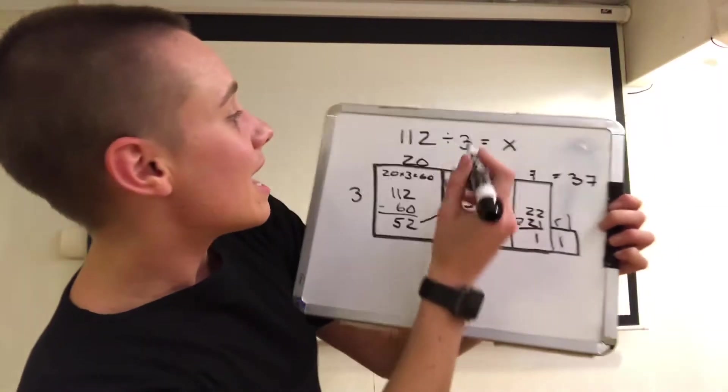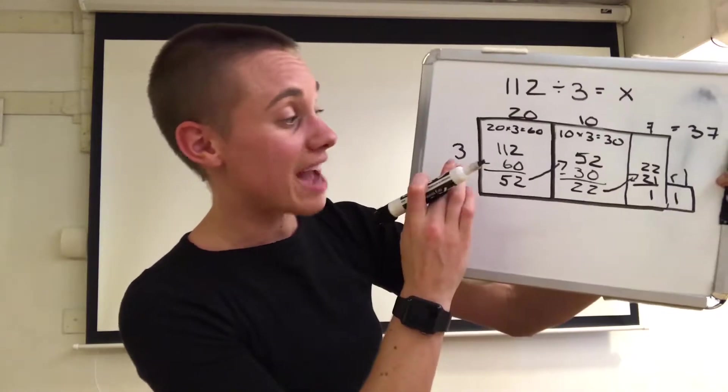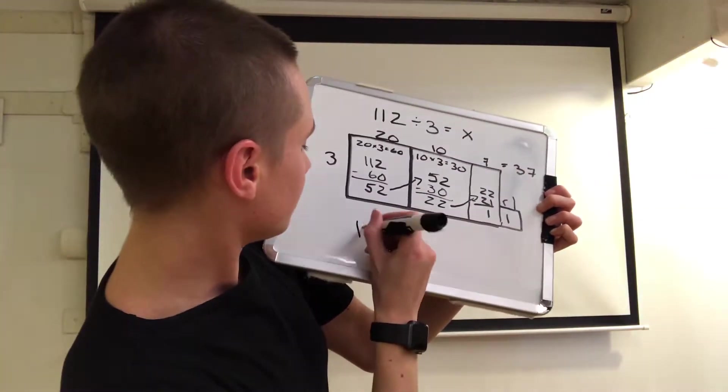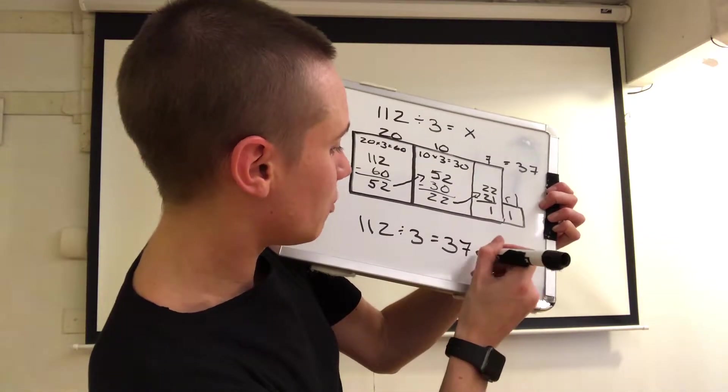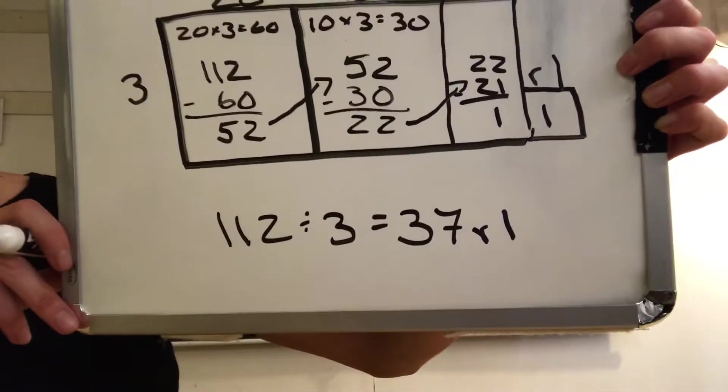That means that 112 ice cubes divided by 3 ice cubes per drink gives me 37 - 37 ice cubes with 1 leftover, or 37 remainder 1.